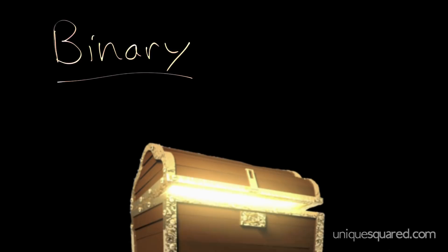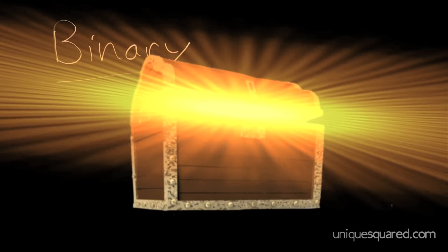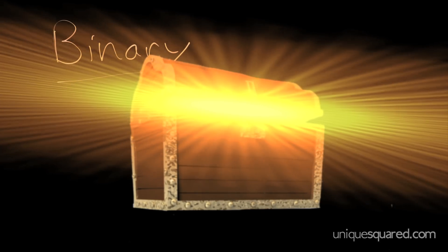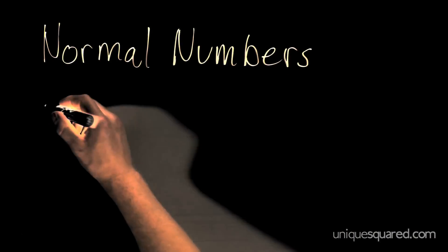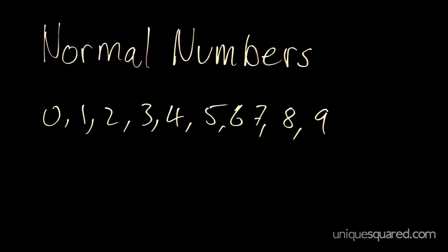And if you stay with me to the end, I'll even show you a way to get around all of the math and a way to set the DIP switches without having to understand binary in the least. In normal life, we have the numbers 0, 1, 2, 3, 4, 5, 6, 7, 8, 9.